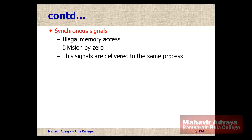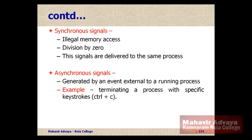Synchronous signals are generated by events like illegal memory access or division by zero, and are delivered to the same process that generated them. Asynchronous signals are generated by events external to the running process — for example, when the user presses Ctrl+C to terminate the process.